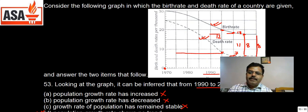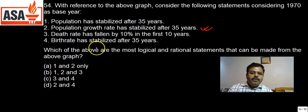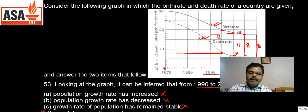Now what about statement 3: Death rate has fallen 10 percent in first 10 years. So death rate has fallen 10%. This is the death rate and first 10 years is 1980. This is 25. 10 percent of 25 is 2.5.